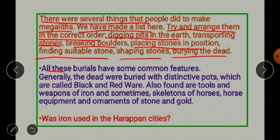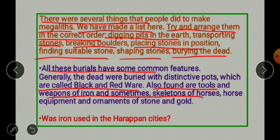All these burials have some common features. Generally, the dead were buried with distinctive pots called black and red ware. Also found were tools and weapons of iron, and sometimes skeletons of horses, horse equipment, and ornaments of stone and gold.